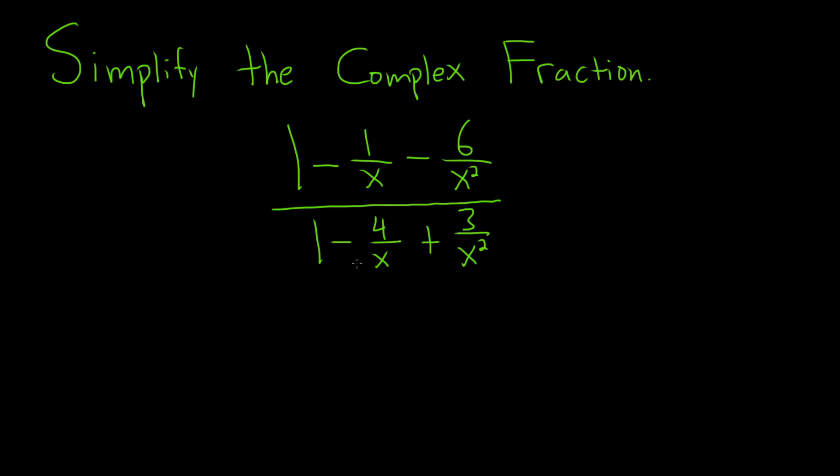So to do that we can multiply by something in a clever way. Think about this, to get rid of the x here on the 1 over x, you can multiply by x. To get rid of the x squared here below this x, you can multiply by x squared. So if you multiply the whole top piece by x squared, it'll get rid of all the x's.